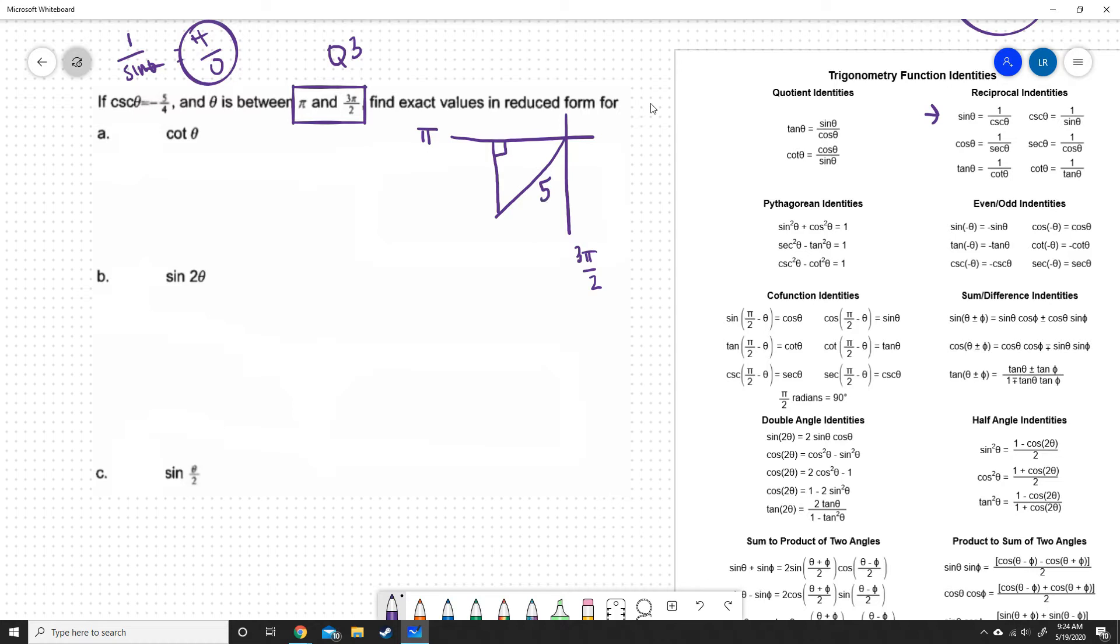Now cosecant is negative 5 over 4, which is hypotenuse over opposite. Our hypotenuse is here. And our opposite, this is always the angle in question, it's always the one that's attached to the origin. So the opposite would be here. Now, this one is the negative piece of it. We are never going to put our hypotenuse as negative, because to find the hypotenuse, you would do a squared plus b squared equals c squared. Well, a squared and b squared are always positive, meaning our c squared is going to be positive.